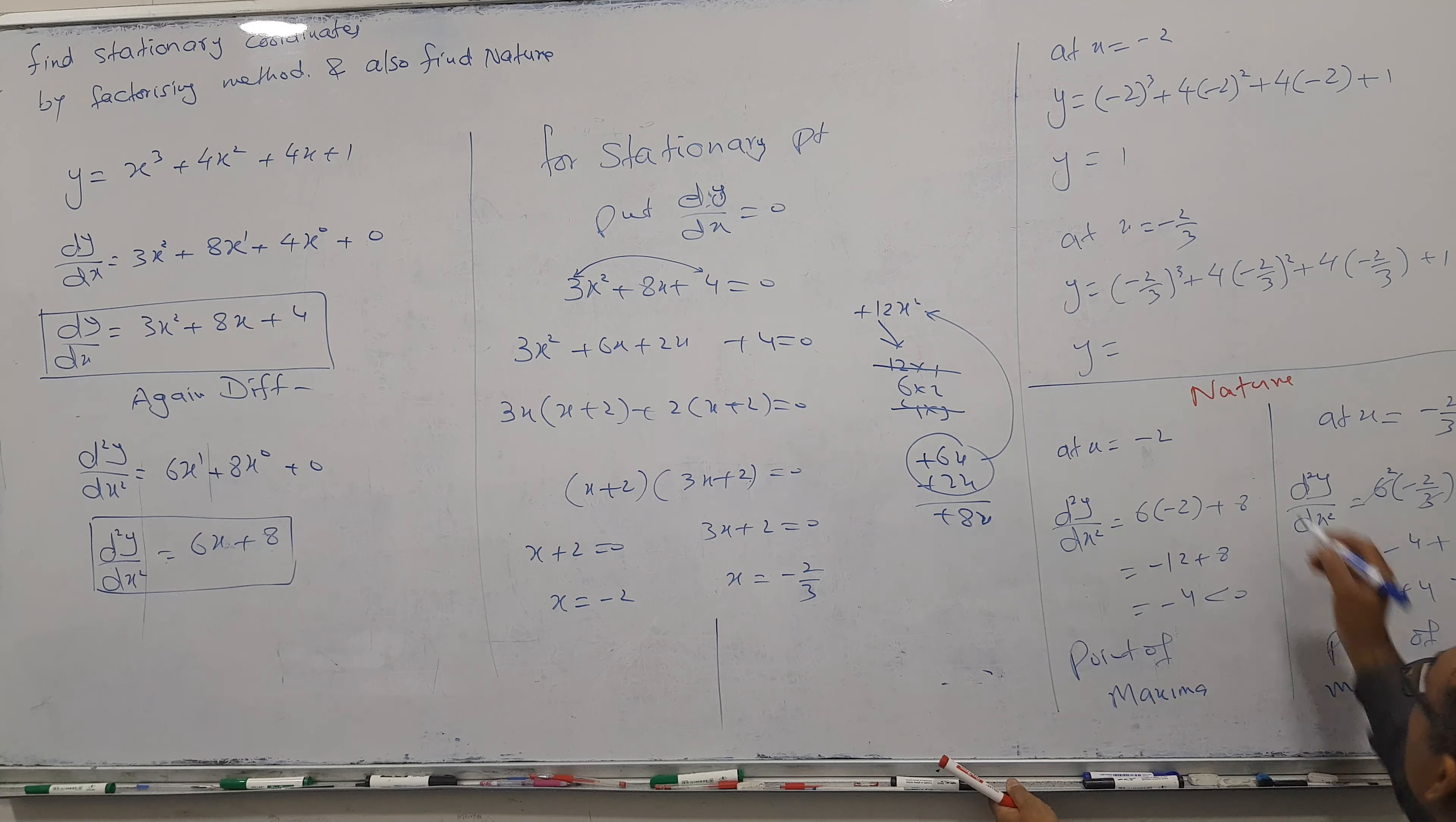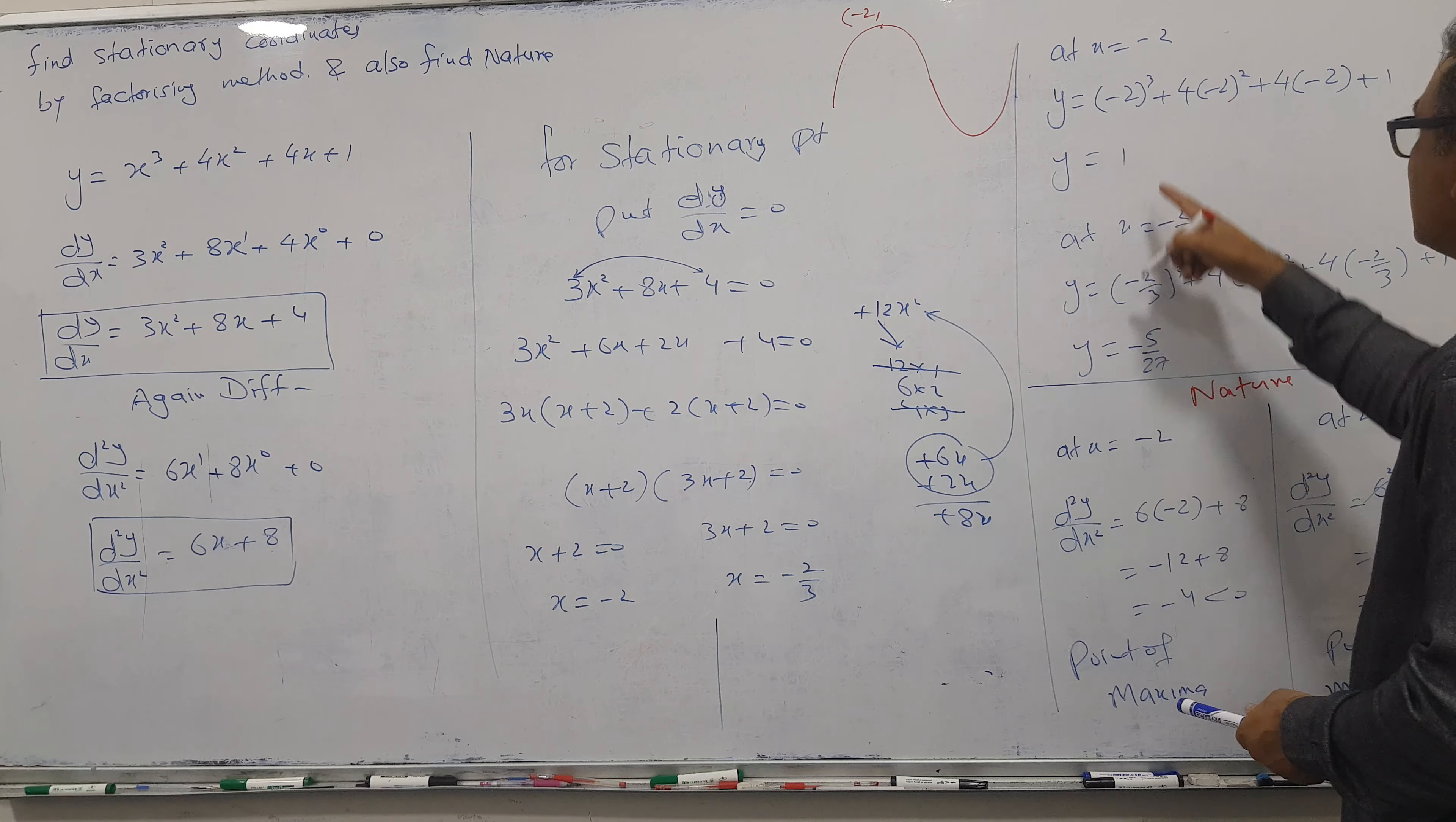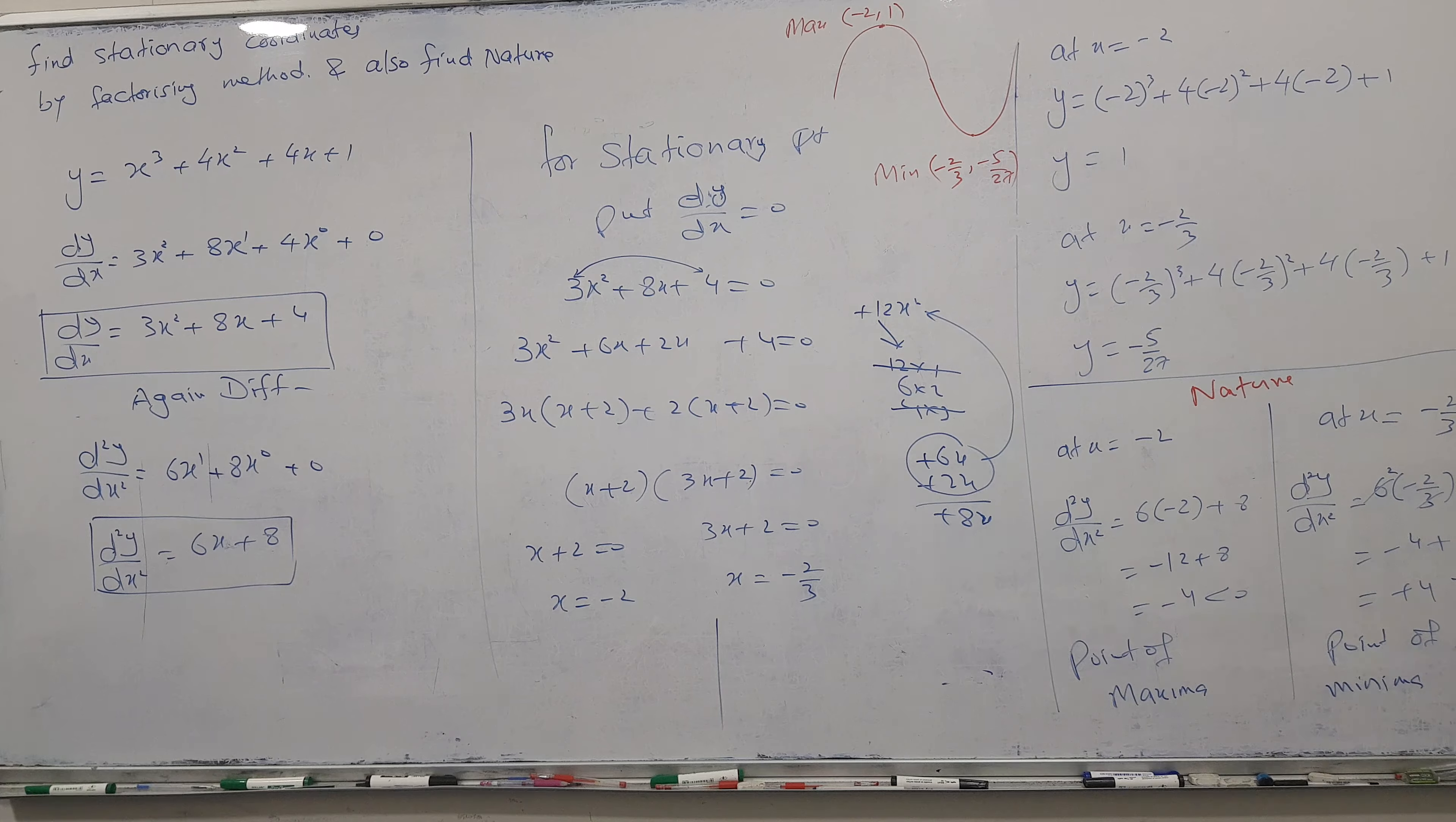I hope it's very clear. We got this kind of thing: at x = -2 it is going on the top, at x = -2/3 it got a bottom. At point (-2, 1) we have maxima. At point (-2/3, -5/27) we have minima. I hope it's clear.